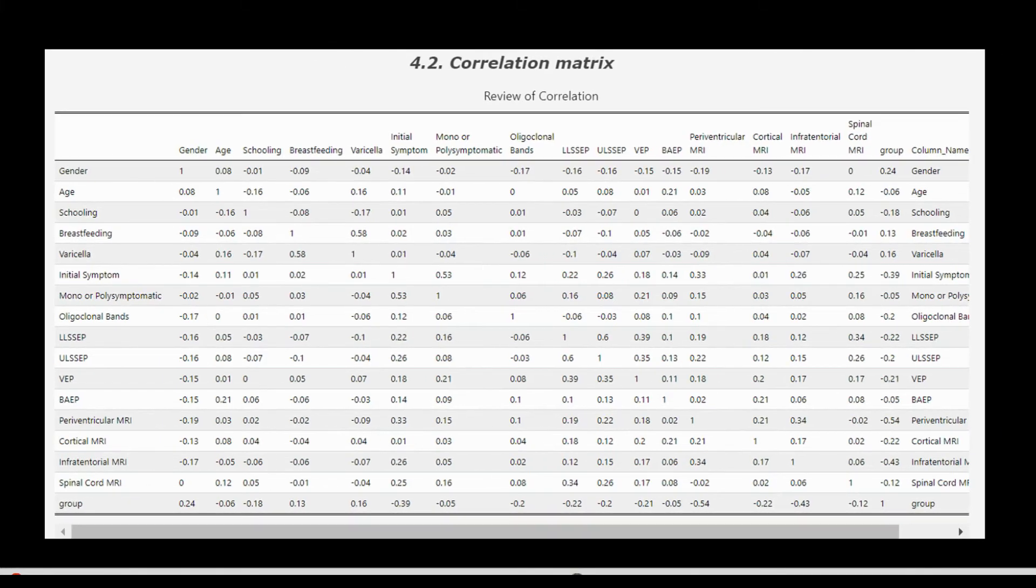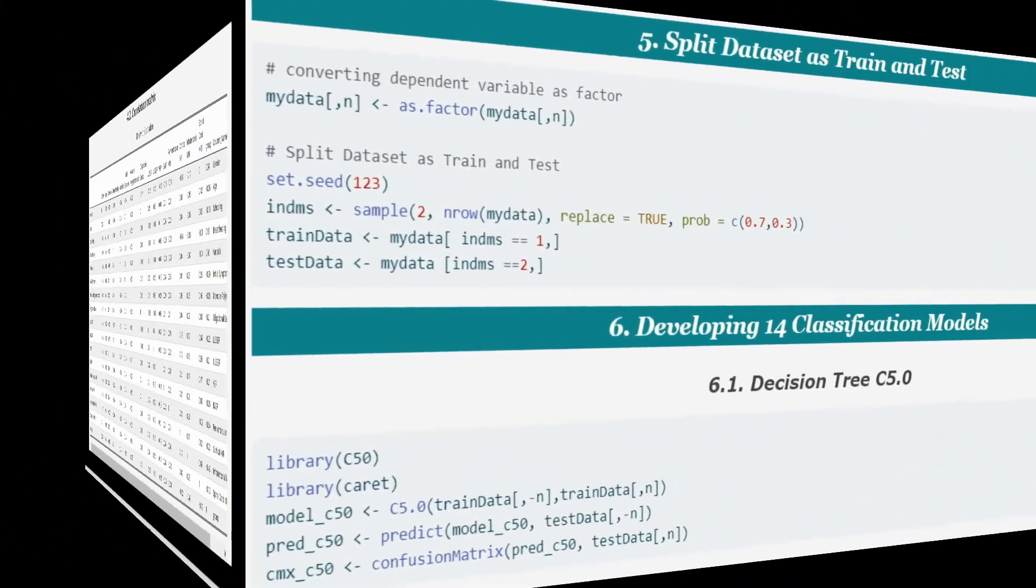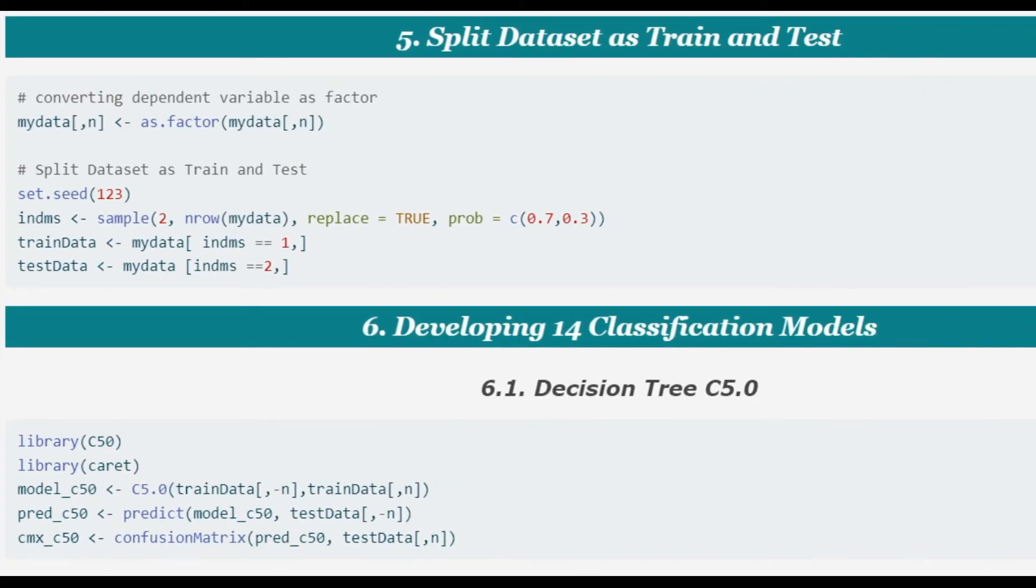Next, as additional information, a table is provided with all correlation values. Next, let's start working on supervised machine learning. As a first step, we need to split the dataset into training and test datasets. We use the function named sample and split the dataset in 70-30 ratio. Now let's jump into building models one by one.